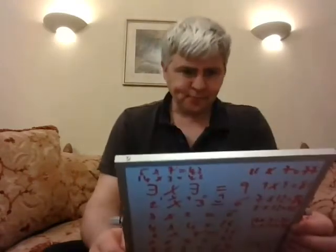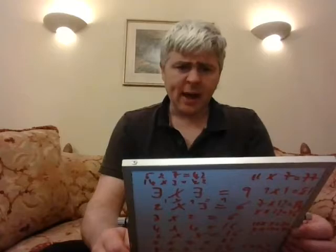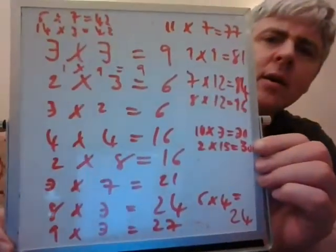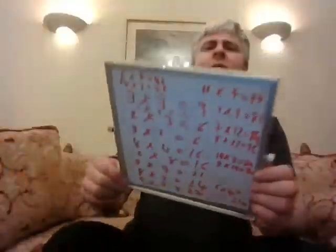I've also got 11 times seven equals 77, nine times nine equals 81, seven times 12 equals 84, eight times 12 equals 96, and ten times three equals 30. I just wanted to show you that. And on this side I've got more — I'll just show you this quickly.